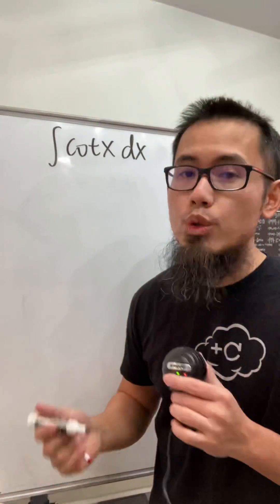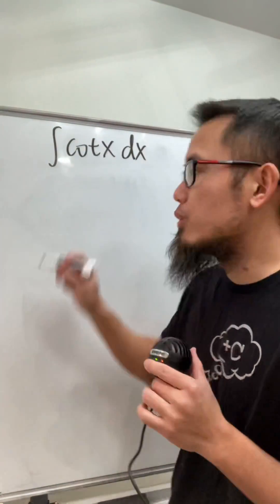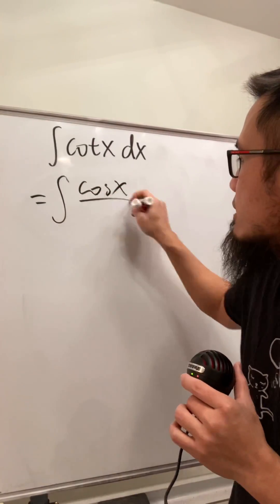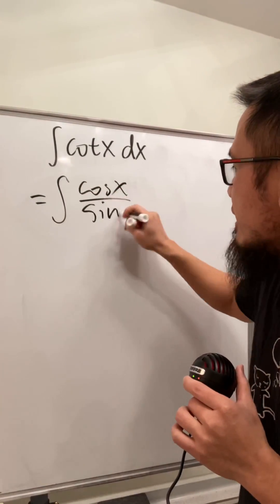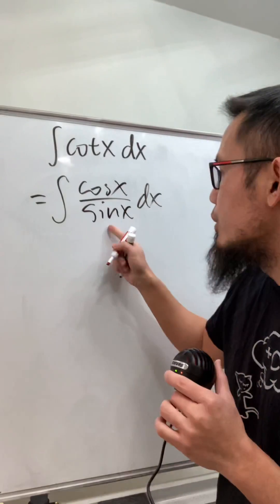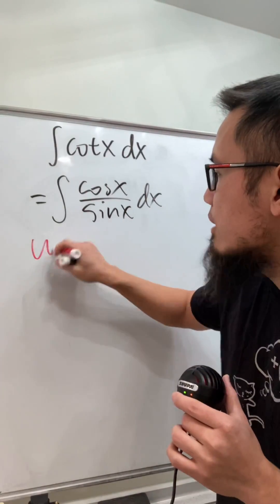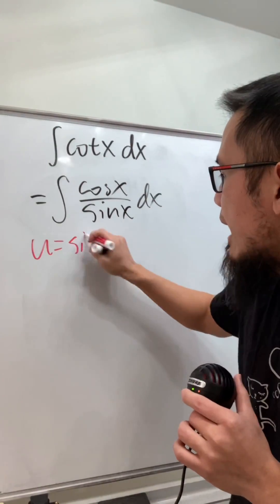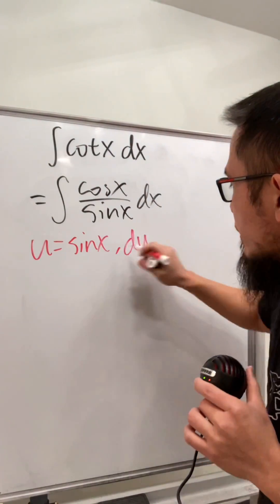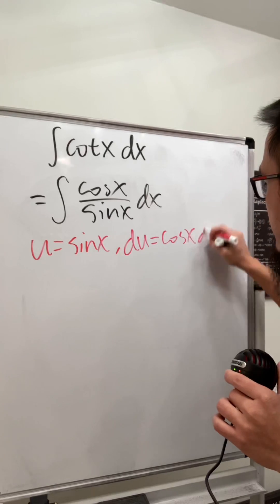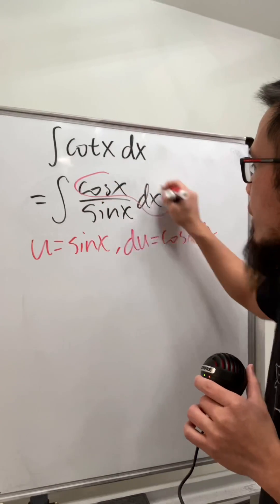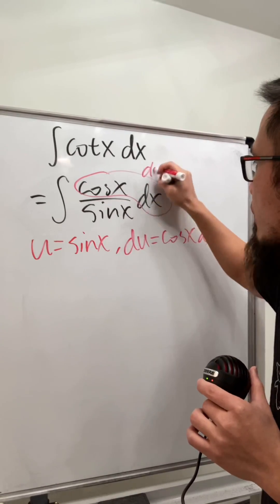I will show you how to integrate cotangent x. To do this, we'll just change cotangent into cosine over sine, so we have the integral of cosine x over sine x. For this, we can just do a u-sub. Let u equal to sine x, and differentiating both sides, we get du is equal to cosine x dx. As you can see, this right here is precisely our du.